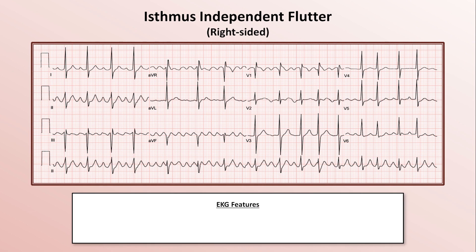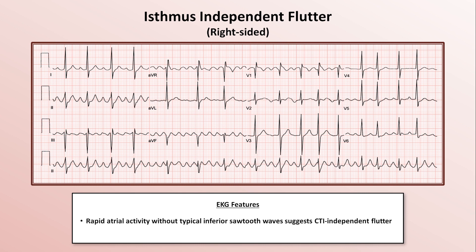Here's the first of two examples. The first thing you might notice is the rapid atrial activity in the inferior leads that almost looks sawtooth-like, particularly in lead three. But the flutter wave is too symmetric in leads two and AVF to be considered consistent with typical flutter, and they also lack the distinctive deep nadir I pointed out earlier. This suggests an isthmus-independent flutter. To determine which atrium it's most likely located in, look at V1 — if the flutter waves in V1 are predominantly negative, it suggests a right atrial circuit, though this rule is not absolute.